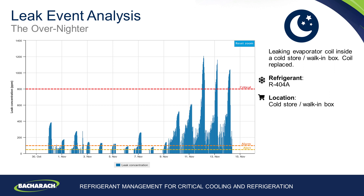In this instance you can see once a coil was replaced the PPM values disappeared. This shows the benefit of the ongoing monitoring system and the leak detection on site, making sure that the fix to the asset was correct and we see no further PPM values indicating any ongoing leak from that system.